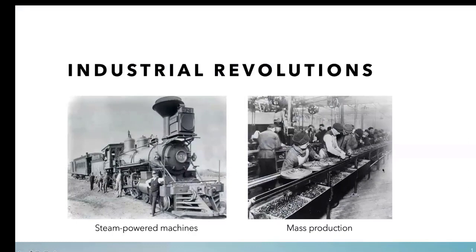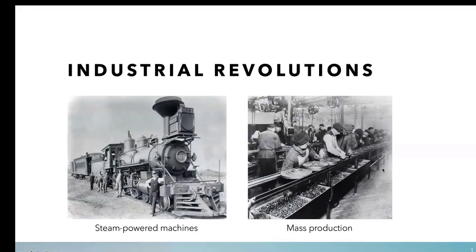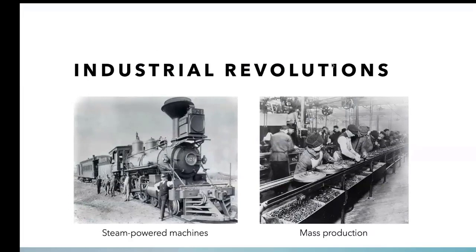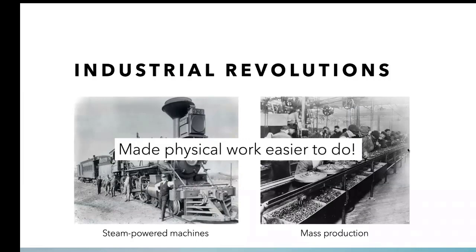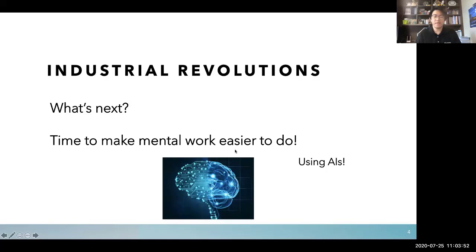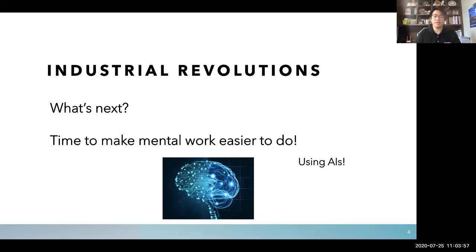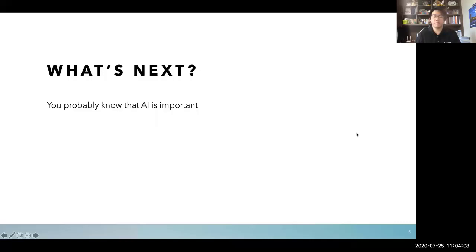We have industrial revolutions where steam-powered machines and mass production were invented. This was a literal industrial revolution because it made physical work easier to do. But these days people talk about the fourth industrial revolution — a new industrial revolution is coming up. We made physical work easier through mass production; now it's time to make mental work easier.